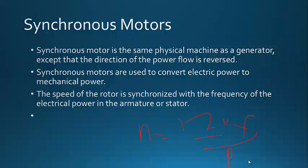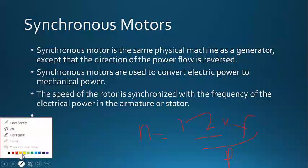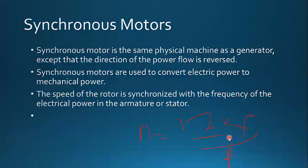The speed of the rotor is synchronous with the frequency of the electrical power in the stator. The speed of a synchronous motor is always proportional to the frequency of the power supply. We operate at a frequency of 50 Hz, so if we connect a synchronous motor to this 50 Hz supply, irrespective of the load connected to it, the speed of the motor will never change. The only parameter that can change the motor speed is the frequency. The speed relationship is: Speed = (Frequency × 120) / P, where 120 and P are constants, so frequency is the only variable.